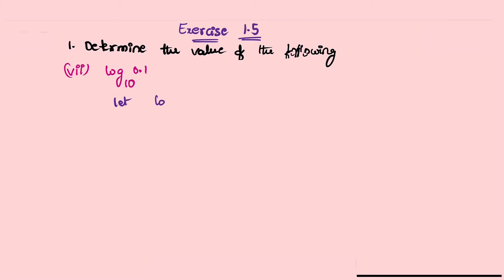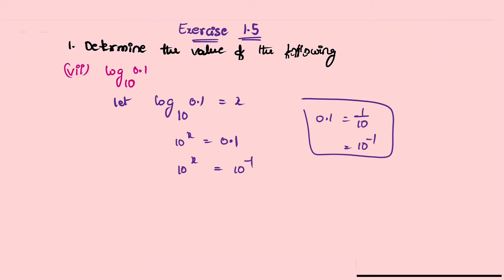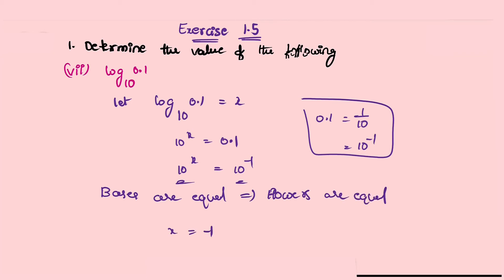Seventh problem: log base 10 of 0.1. Let log base 10 of 0.1 equal to x. Exponential form: 10^x = 0.1. Now 0.1 = 1/10 = 10^(−1), so 10^x = 10^(−1). Bases are equal so powers are equal: x = −1. Therefore log base 10 of 0.1 equals −1.